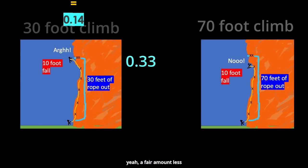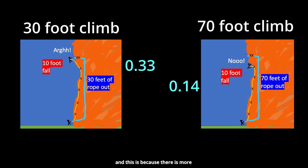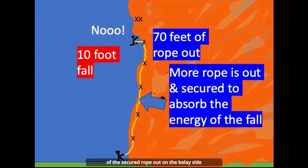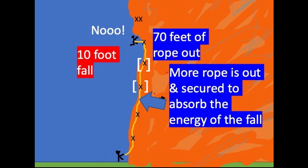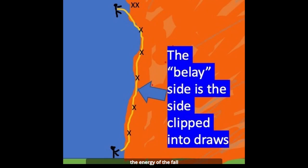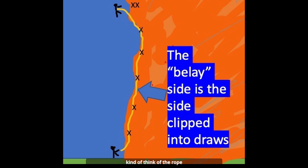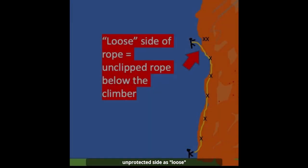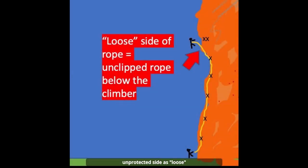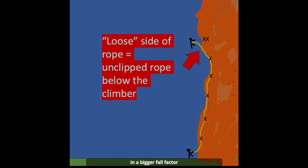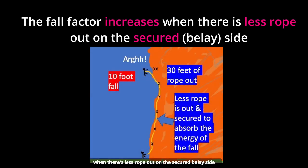This is because there's more secured rope out on the belay side — clipped in to carabiners and draws on the belay side — to absorb the energy of the fall. Think of the rope on the climber's unprotected side as loose. A bigger fall will result in a bigger fall factor when there's less rope out on the secured belay side.